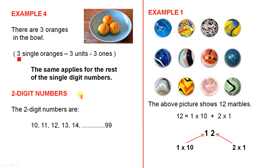Let's look at two-digit numbers. The two-digit numbers are 10, 11, 12, 13, 14, right up to 99. Why are they called two-digit numbers? Because they have two digits in them. That's all, no more. Let's look at the first example to explain the meaning of two-digit numbers. The above picture shows 12 marbles. Here they are. What does 12 actually mean? Well, 12 means this.